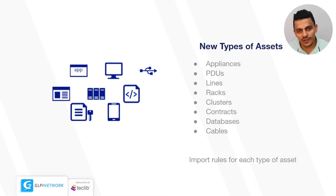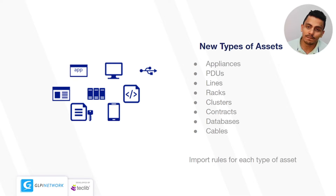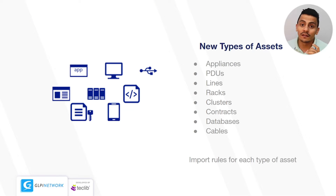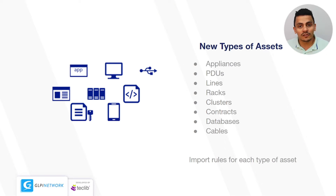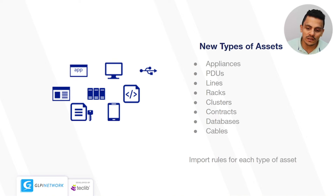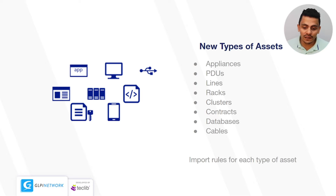Also, the GLPI inventory has new types of assets. For example, we have appliances, PDUs (power units), telephone lines, and racks — so you can see the rack drawn and check for free space or available energy. We also have clusters, contracts, databases, and cables. The reason contracts, databases, and cables are highlighted is because we could use them before, but right now we have import rules for each type of asset.